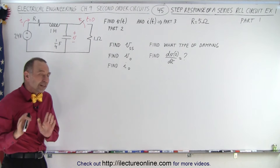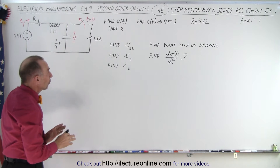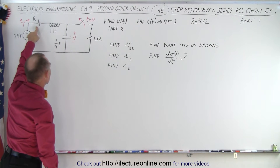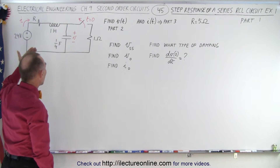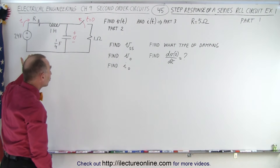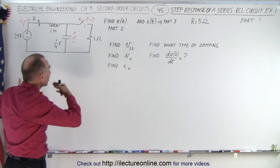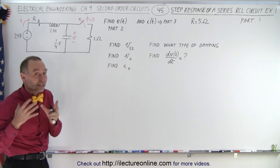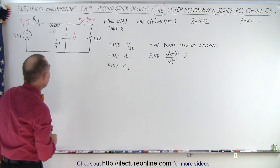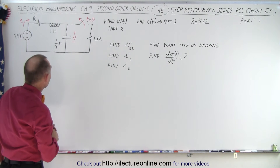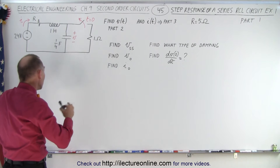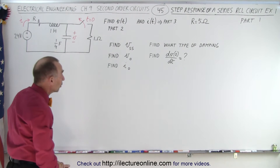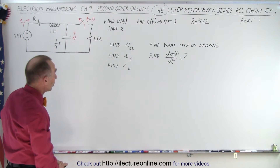We're going to do several examples with different values for this R. Because as the value of R changes, we'll see different reactions in the current and different kinds of damping — for example, when R is large versus small. Let's see what happens when the resistance changes.